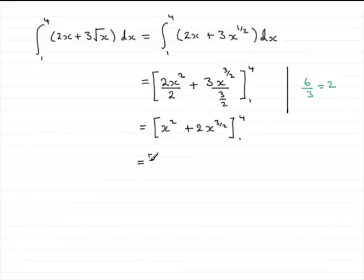So if we do that, we've got 4 squared, I'm just going to write that like that, plus 2 times 4 to the power 3 over 2. Then, we subtract what we get when we substitute x as 1 in. So we have 1 squared plus 2 times 1 to the power 3 over 2, and close the brackets.